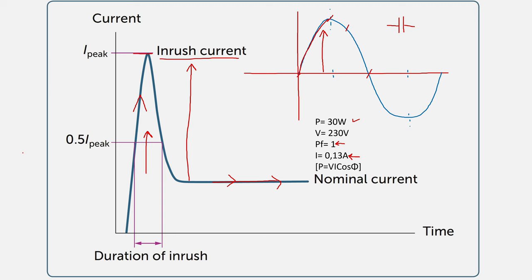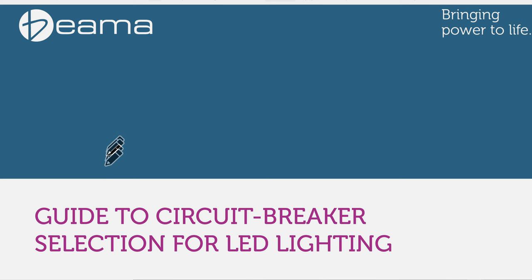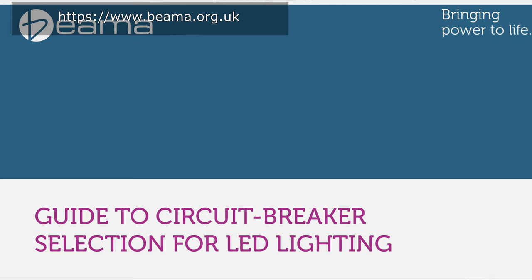But if we turn on the power at a high point in the waveform, we'll see a sudden inrush current, and this is very important because this inrush current can be significantly higher than the nominal current. That's why we need to specify the circuit breakers based on this inrush current.